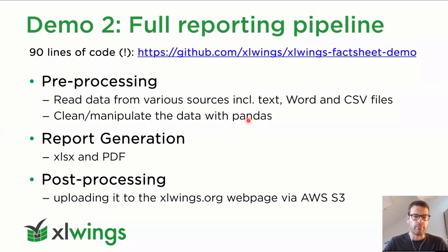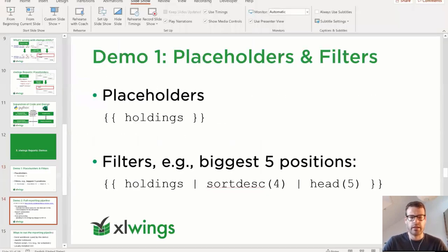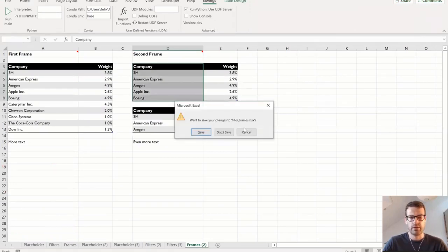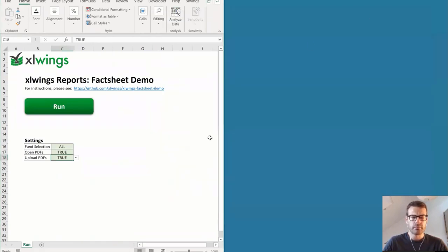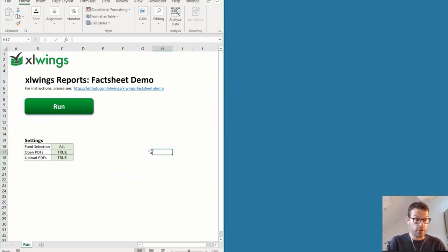We're going to see how Pandas can manipulate the data, and then mostly how we can produce professional-looking PDFs out of the Excel template. To really finalize the whole process, we're going to upload those generated PDFs live to the xlwings.org homepage. Let me switch to the other demo now. This again — let's stay for just a few more minutes on the side of a business user who is responsible for producing these fact sheets. We'll look at the code and the different components involved after the demo.